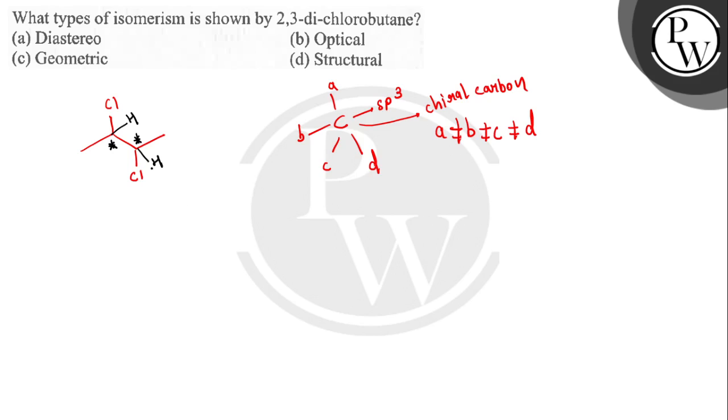So if a compound contains chiral centers, then it will show optical isomerism. So option B is the correct answer because the compound contains chiral centers, and therefore it shows optical isomerism.